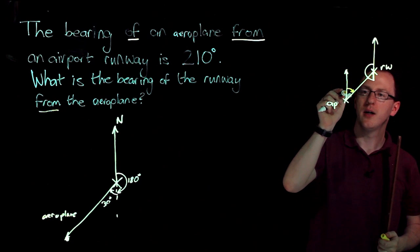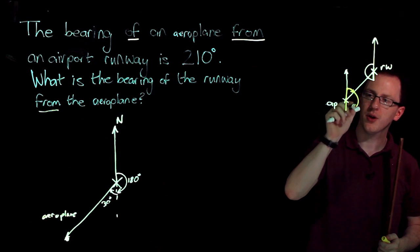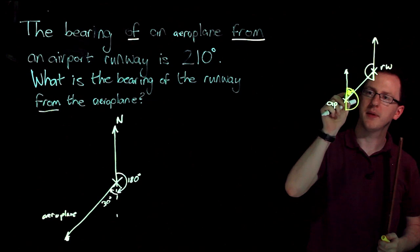So I get my protractor. I make sure zero is pointing north. I measure this angle up here.